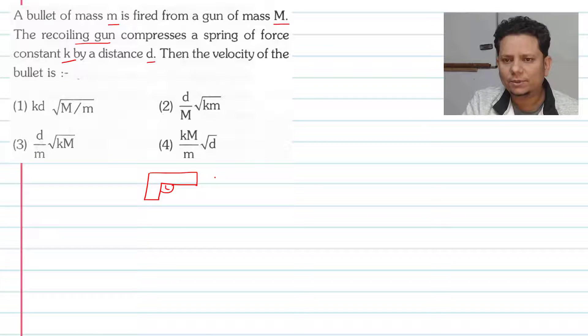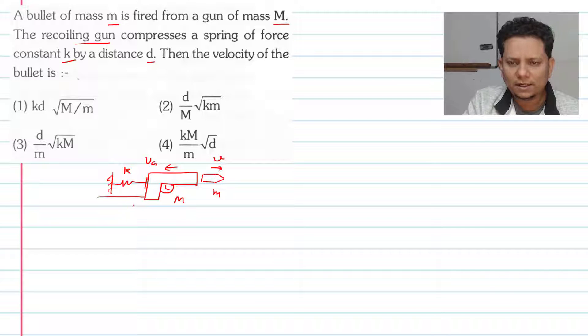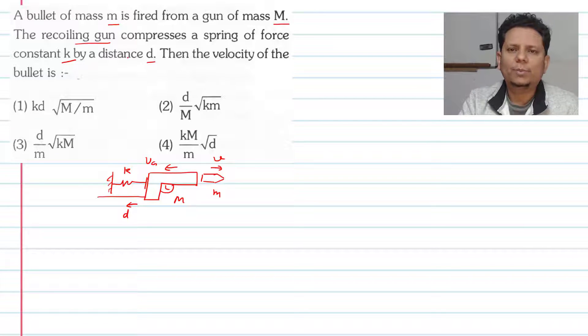Now scenario is that this is a gun. This gun has a bullet fired and a bullet of mass capital M and a bullet of mass small m. The bullet has a velocity and recoil. Let's call it the velocity of gun. Now you have this gun in a spring. This arrangement is a spring constant k. You have this gun like this. So recoiling gun compresses a spring of force constant k by d. We can tell the value of v. This is our answer.